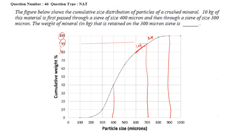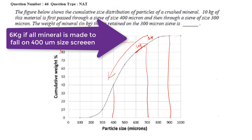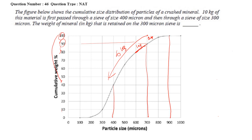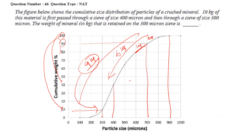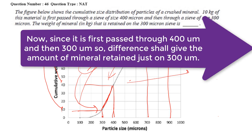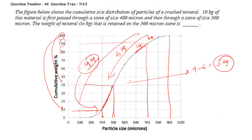When it reaches 400 micron, the total amount remaining above 400 micron is 6 kg (100 − 40 = 60%, so 6 kg). The amount of particle above 300 micron is 100 − 10 = 90%, meaning 9 kg. So 9 kg of mineral is above 300 micron size and 6 kg is above 400 micron. What is retained between 300 and 400 micron? It is 9 − 6 = 3 kg. Thank you all. Hope this will help you in your preparation.